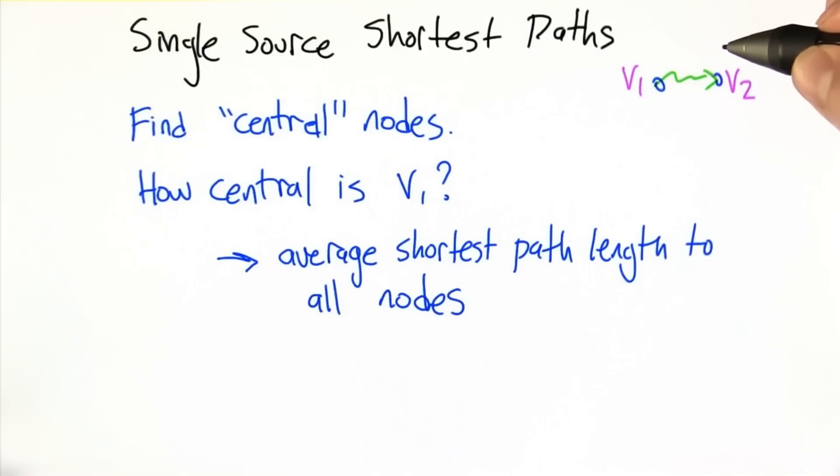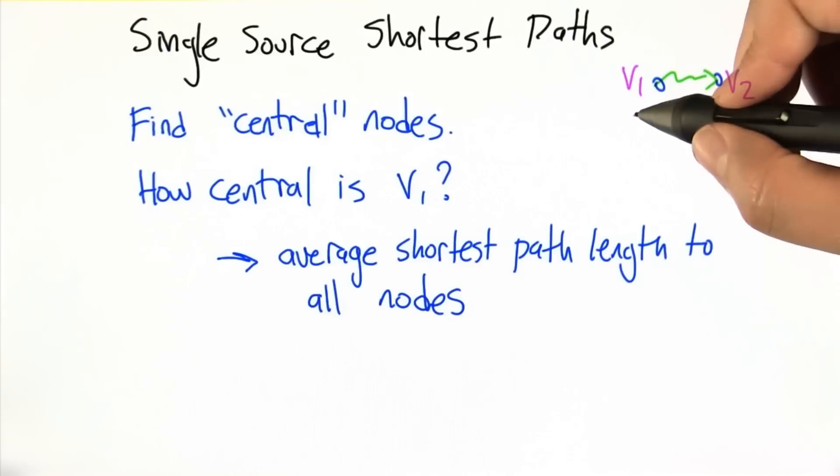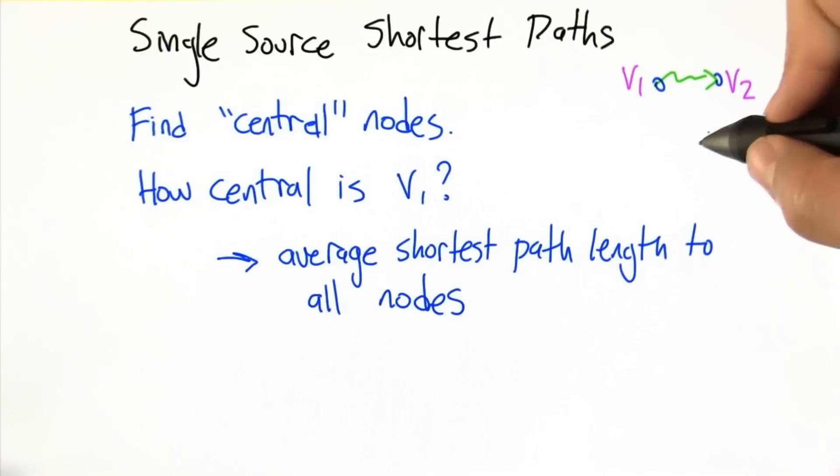So next we're going to extend this idea of finding a path from V1 to V2 to the idea of finding a shortest path from V1 to all other nodes.